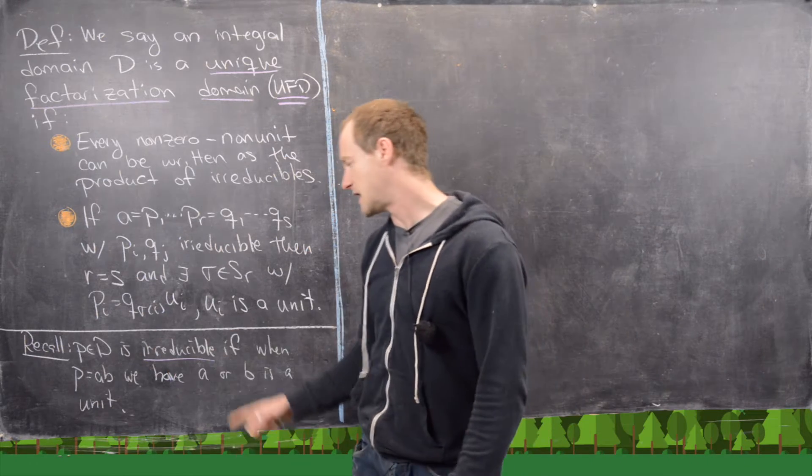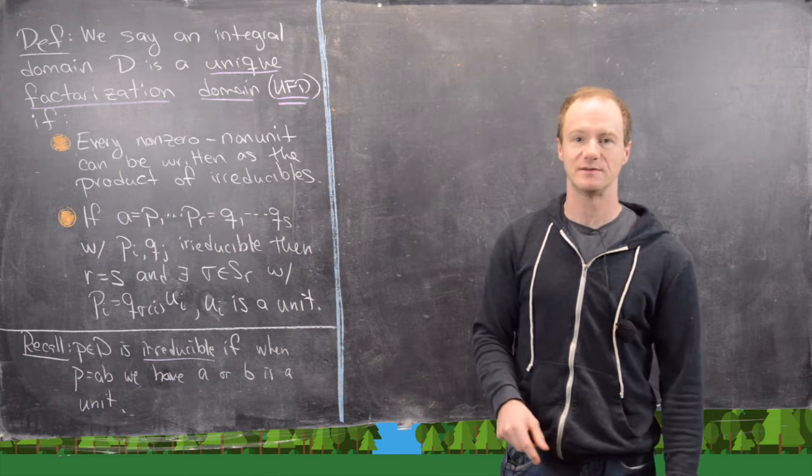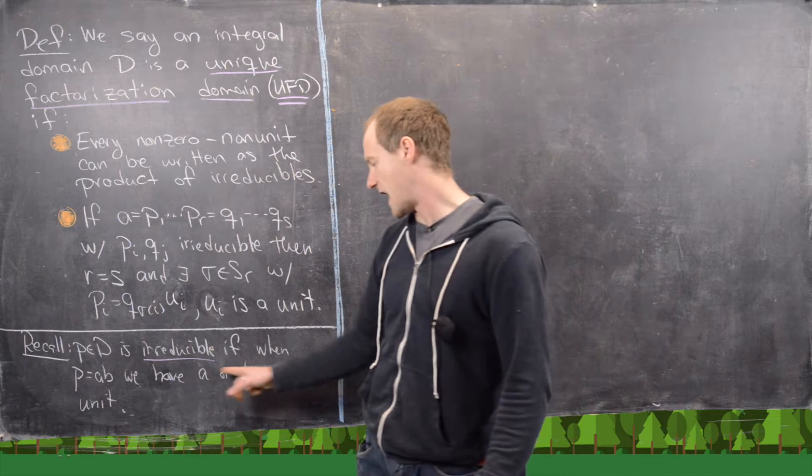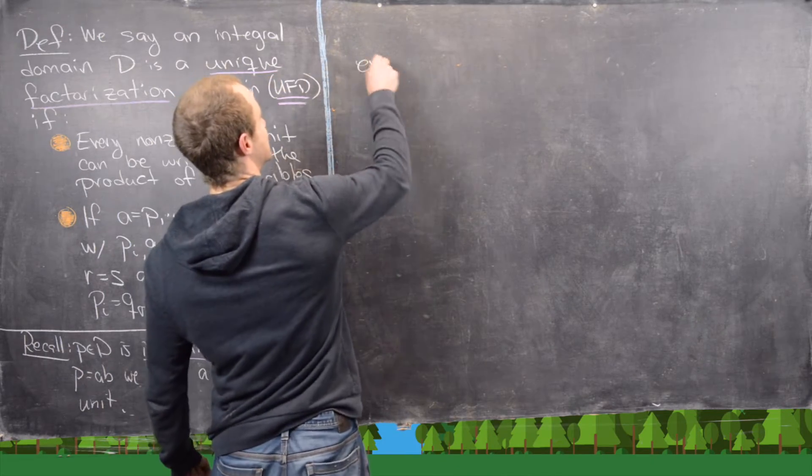So we say that P is irreducible if, when P can be factored into A times B, we either know that A or B is a unit. So let's go ahead and look at some examples.